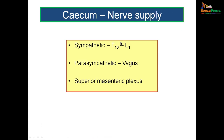The cecum is supplied by autonomic nerves. Sympathetic fibers arise from spinal segments T10, T11, T12, and L1, traveling via the splanchnic nerves to the superior mesenteric plexus. This plexus also receives parasympathetic fibers from both vagus nerves, and together they supply the cecum.